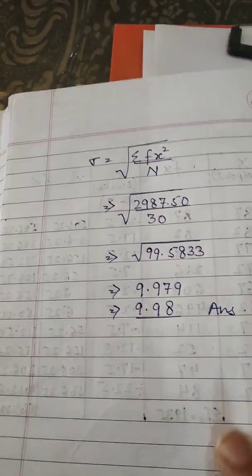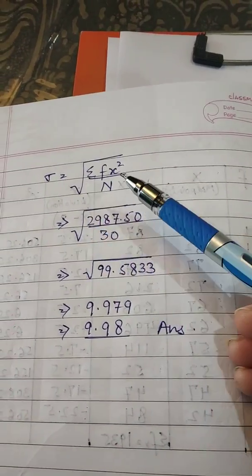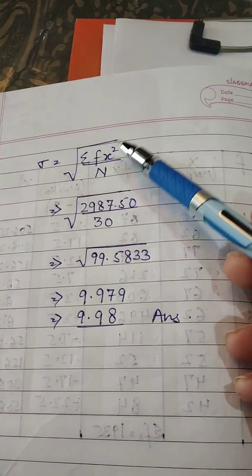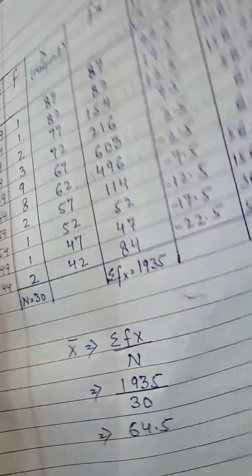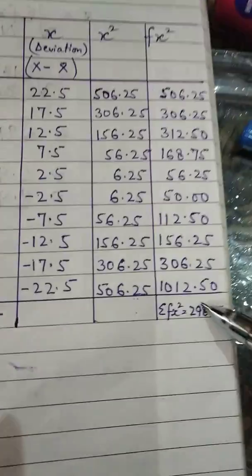Next, you will put all the values in the formula. Toh SD ka aapka formula tha. Under root sigma fx square upon n. Abhi aapne sigma fx square nikala. Yeh jo thha multiplication yeh jo aaya tha.